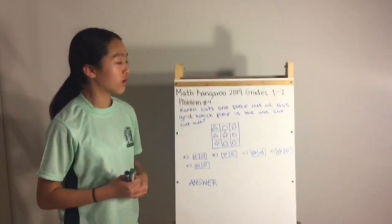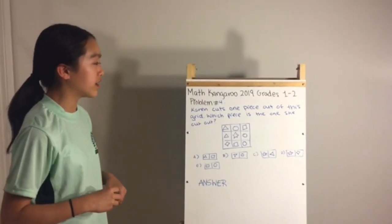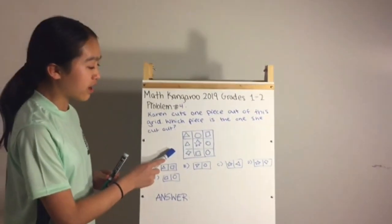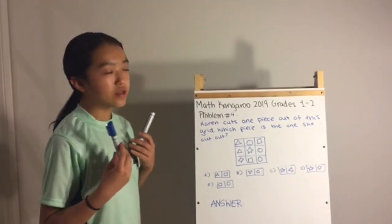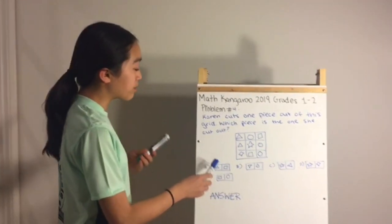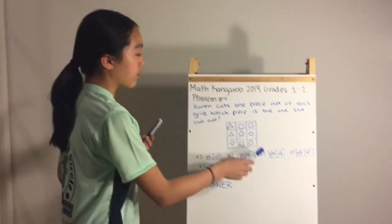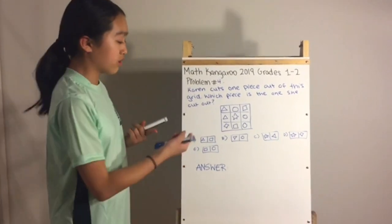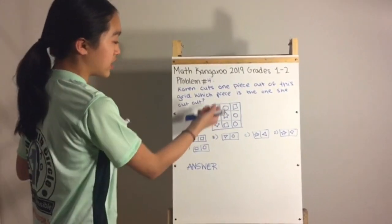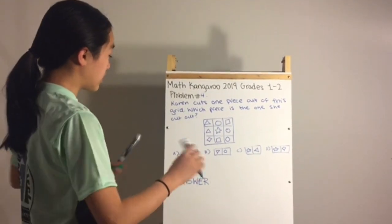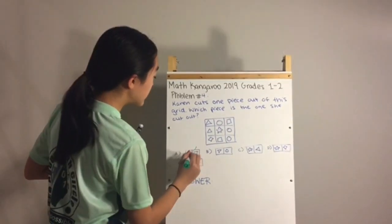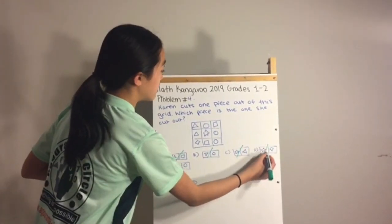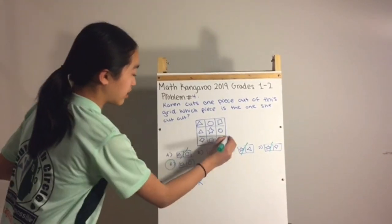Problem number four: Karen cuts one piece out of a grid — which piece is the one she cut out? We match each answer option to a part of the grid. A piece with a triangle on the left and square on the right can't be found in the grid, helping eliminate B, C, and D. The answer is E.